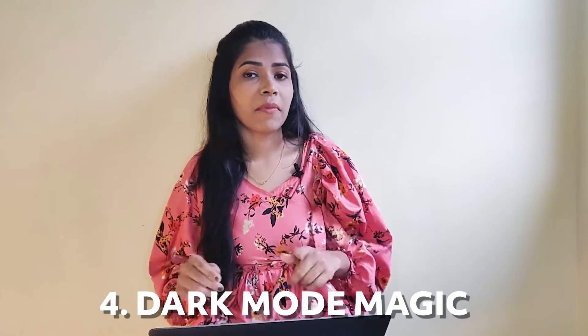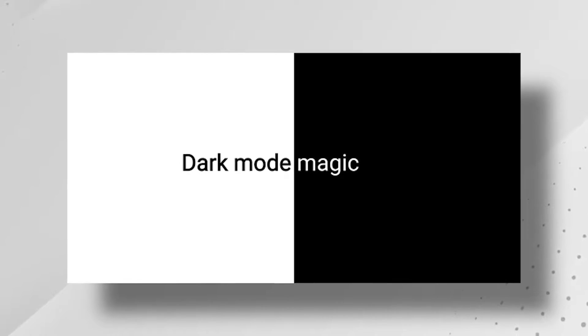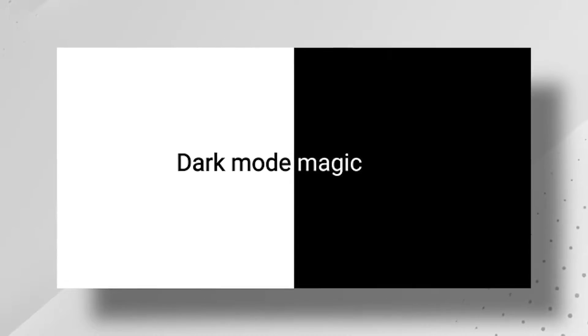Number four, Dark Mode Magic. It's a very interesting plugin which actually helps you to change the light theme to dark theme with just one click. It helps in converting colors from light theme to dark theme. So it's very helpful if you are creating something in both light and dark theme designs — it saves a lot of time and energy.